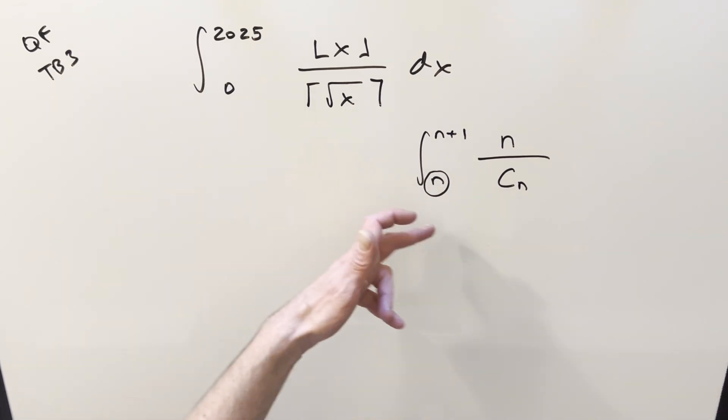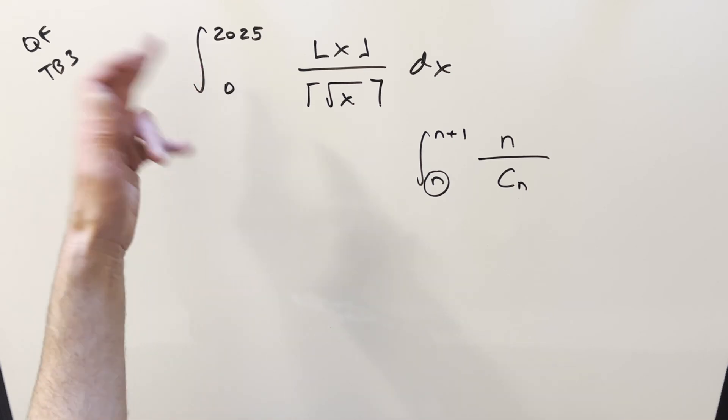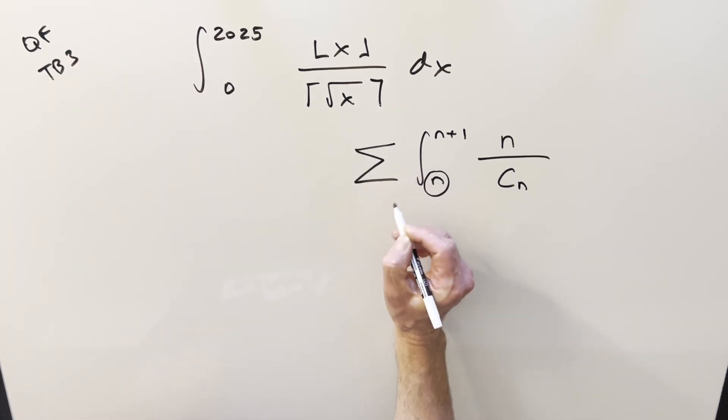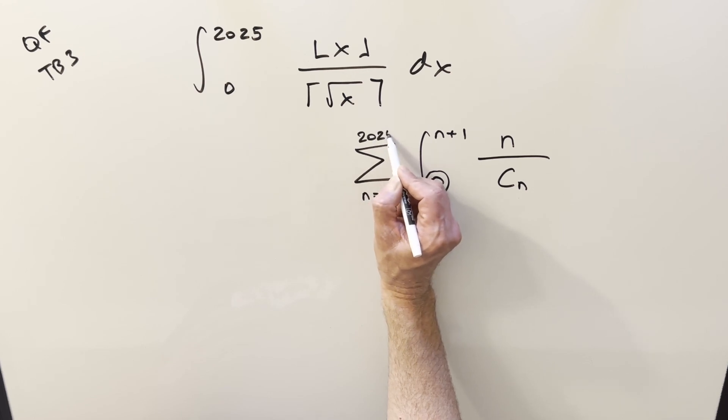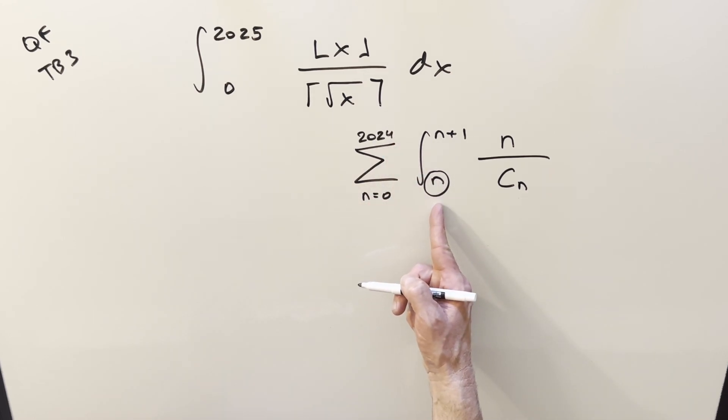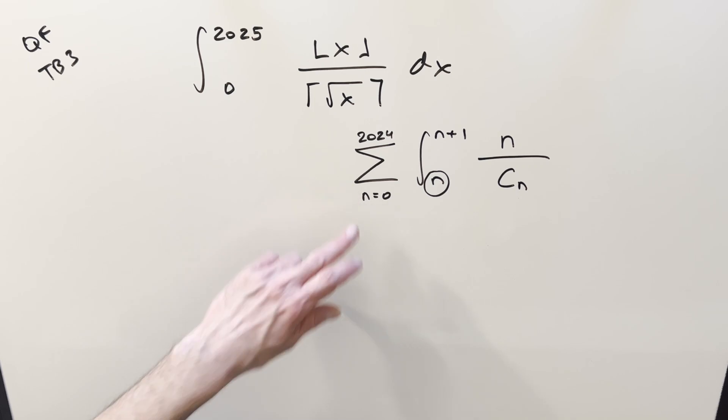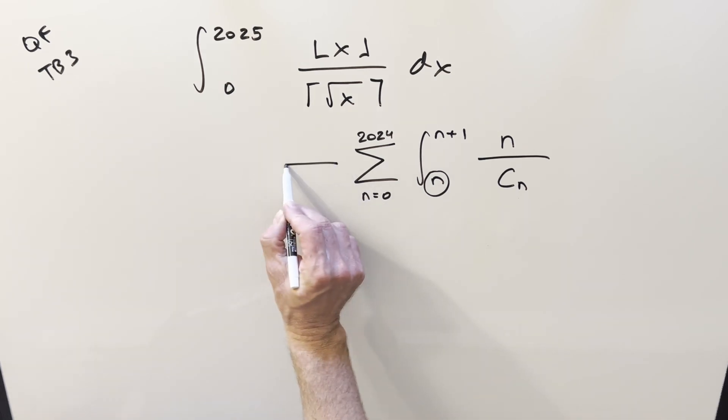And now for our whole expression, it's not going to be one integral. It's going to be all of these. So we need to sum this up, turn this into a summation. So our first value, our lower bound is going to be zero. So we're going from n equals zero to 2024. Not 2025, as if you plug in 2024, the last integral is going to go from 2024 to 2025. And so this is going to be the expression we need. Let's move everything over to the left.